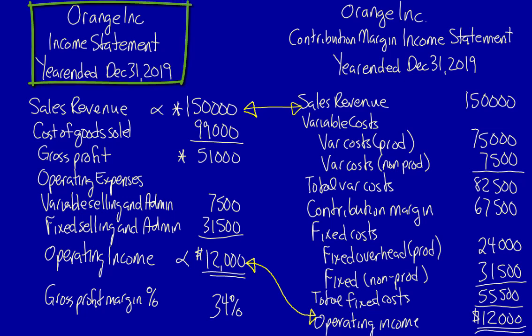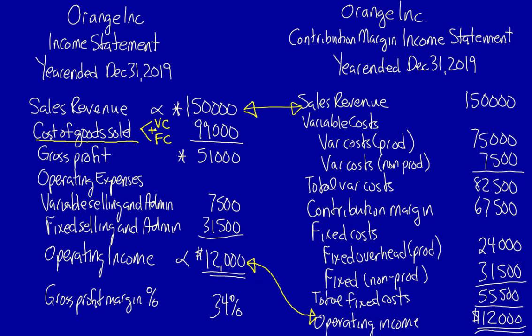In the traditional income statement, we use absorption costing — something that will be introduced in a future video. This means that variable and fixed production costs, also called manufacturing costs, are included in the cost of inventory through the cost of goods sold account. Revenues minus all production costs — both variable and fixed — is used to calculate gross profit. Operating expenses are listed next, and they're also a mix of fixed and variable operating costs such as selling, administration, marketing, and distribution. These are also called non-production, non-manufacturing, or period costs. Gross profit minus operating expenses equals operating income. This statement is required for both external reporting and taxation purposes under GAAP.